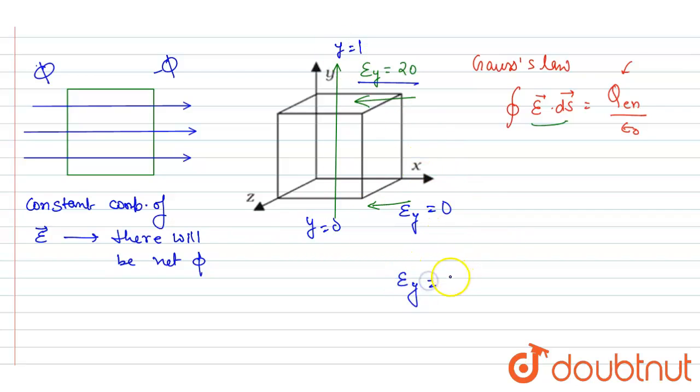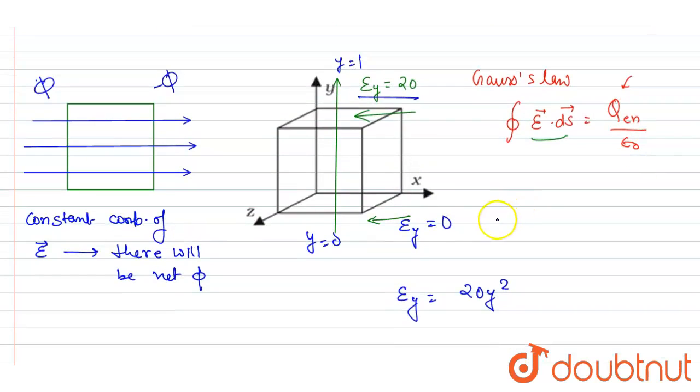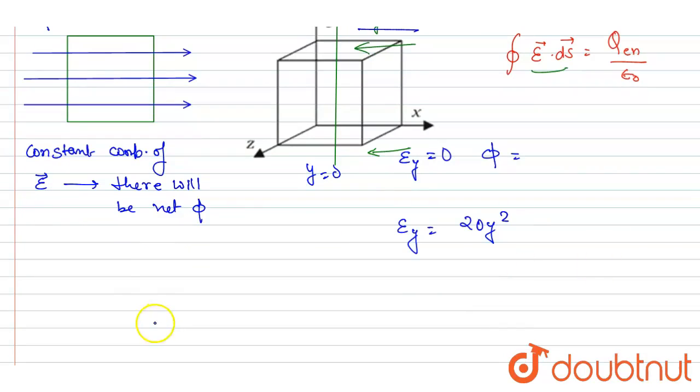We know that E_y is the function of the y component. So here it will be... if you see the flux here, it is E dot A, right? We know that the flux equals E dot area vector, and both are here parallel to each other.